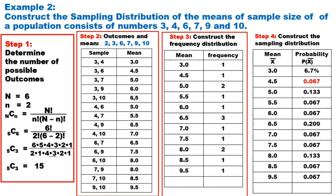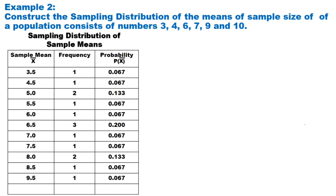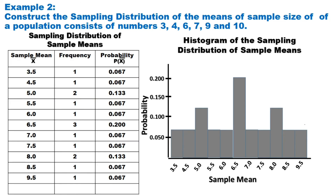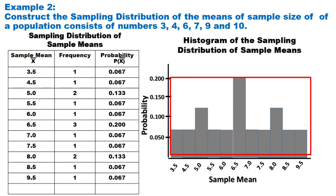For the remaining probabilities, move the decimal point two places to the right and affix the percent sign. After that, we have the sampling distribution expressed in terms of percent. On screen is the three-column sampling distribution of sample means including the frequency and corresponding probability. The histogram of the sampling distribution has the sample mean on the horizontal axis and probabilities on the vertical axis. The bars represent each mean and their height corresponds to the respective probability.